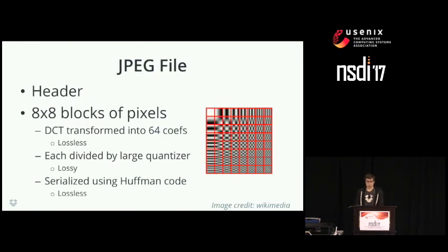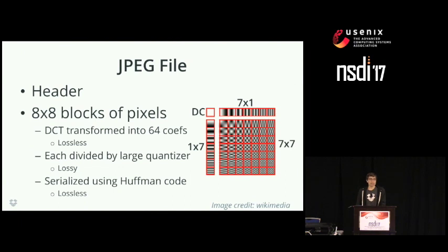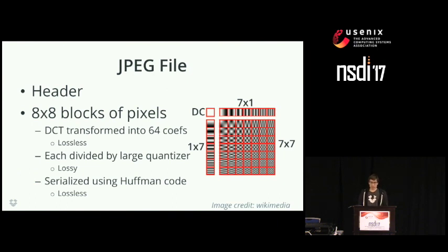To understand how Lepton works, I'll describe how JPEGs work at a high level. JPEGs begin with a header that saves Huffman tables, and then the image is broken into 8x8 blocks of 64 pixels. The coefficients of these blocks are transformed into frequency space with an FFT, which puts most of the power into the top-left corner. Then the lossy step happens: a large quantizer divides each coefficient individually, causing many to round to zero. Finally, the results are serialized with the Huffman code from the header.